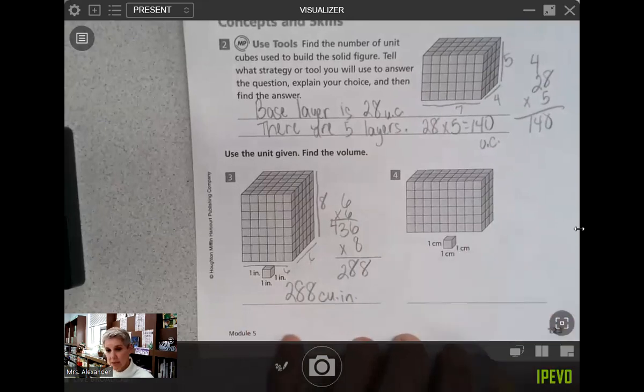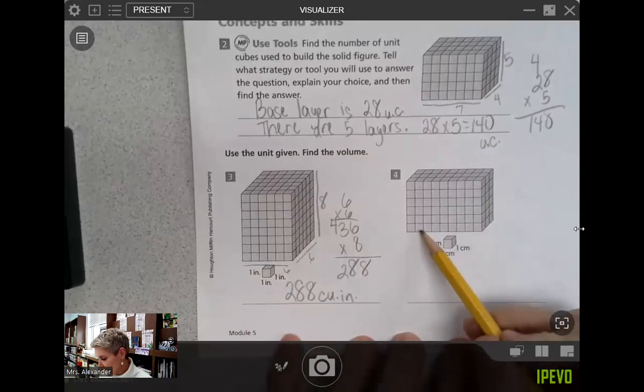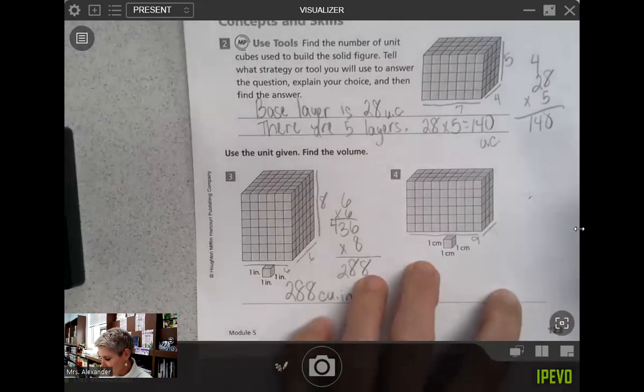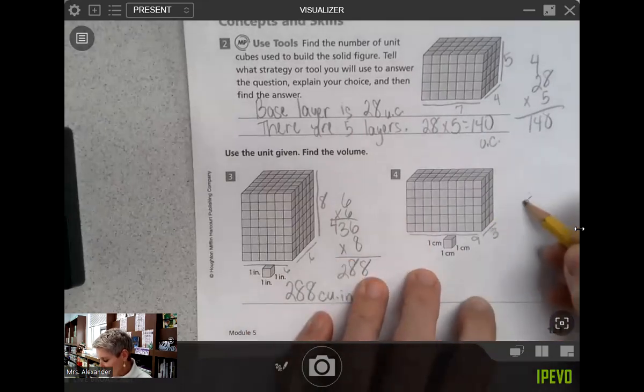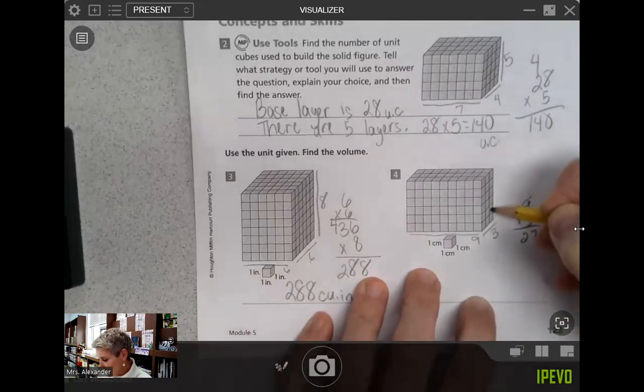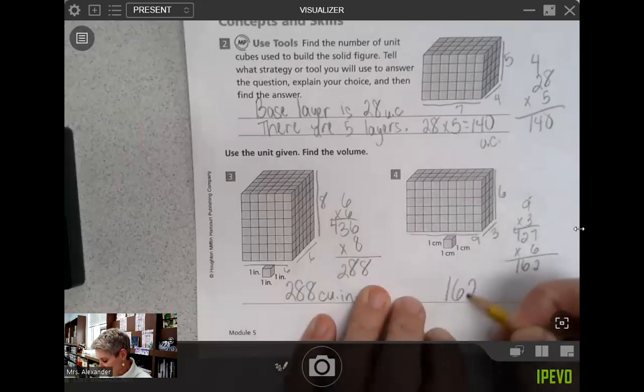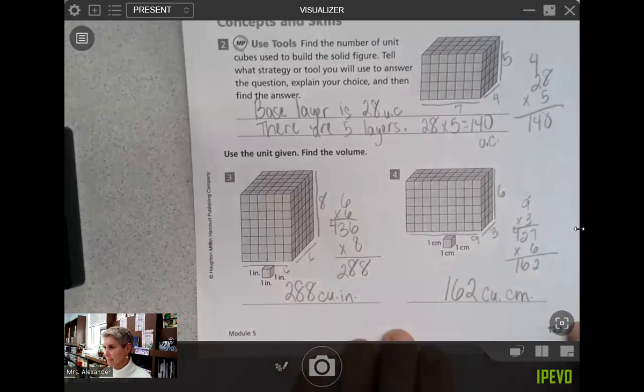Here we're working with centimeter cubes. Again, one, two, three, four, five, six, seven, eight, nine in the front that I can see. And I see that there are three, oh I wrote another nine, there are three rows. Nine times three is 27. And I have one, two, three, four, five, six layers of 27. 27 times six, I believe that would be 162 cubic centimeters. All right, so that would be the first part of your review.